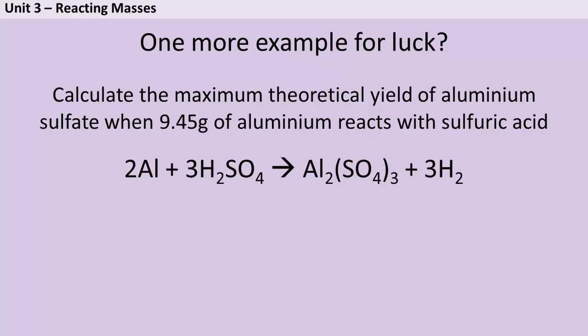Hopefully you followed that okay, but let's look at one more example just in case. Here we've been asked to calculate the maximum theoretical yield of aluminium sulfate when 9.45 grams of aluminium reacts with sulfuric acid. So first of all, don't panic. Maximum theoretical yield just means what is the most aluminium sulfate you could make. If this reaction goes perfectly, if we don't lose any in extraction, if we don't have any side reactions, we don't have any reversible reactions, how much aluminium sulfate should we make?